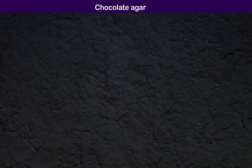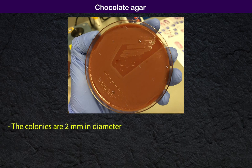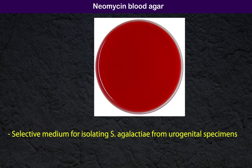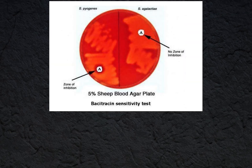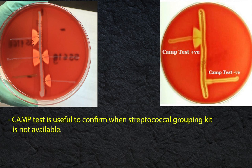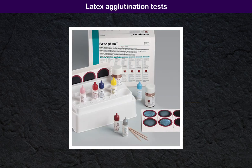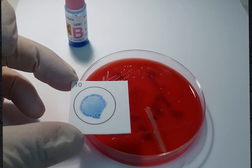On chocolate agar, colonies are 2 millimeters in diameter and gray-white in color. Neomycin blood agar is a selective medium for isolating S. agalactiae from urogenital specimens. S. agalactiae is bacitracin resistant (0.04 international units). The CAMP test is useful to confirm the organism when a streptococcal grouping kit is not available — this organism is CAMP positive; the CAMP factor lyses sheep or bovine red blood cells pre-treated with the beta-toxin of S. aureus. Hippurate hydrolysis test is also useful when a streptococcal grouping kit is not available, as hippurate hydrolysis is an important diagnostic criterion.